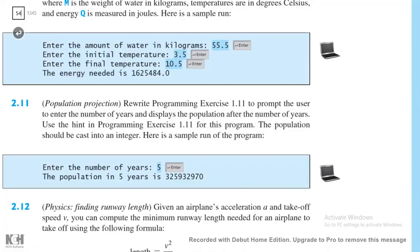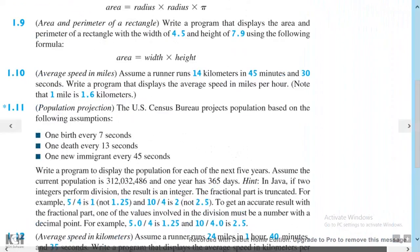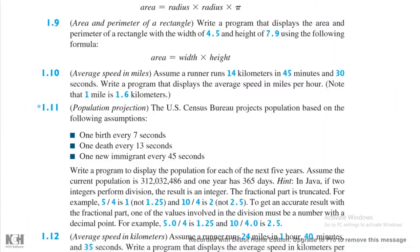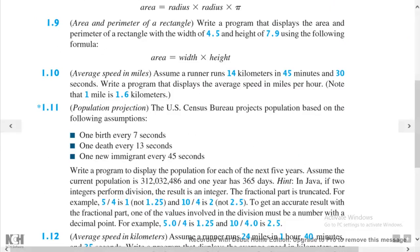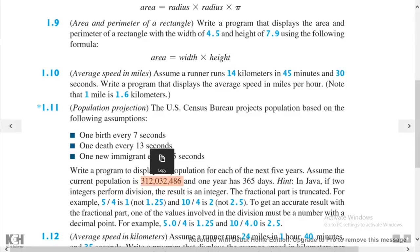It's on page 54. The U.S. Census Bureau projects population based on the following assumptions: one birth every seven seconds, one death every 13 seconds, one new immigrant every 45 seconds. We were asked to write a program to display the population for each of the next five years. Assume the current population is the given number, and one year has 365 days.